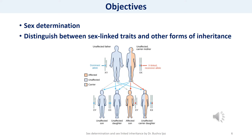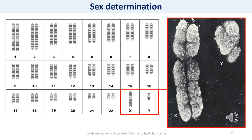As it turns out, Aristotle was onto something — at least in the case of some reptiles, in which the temperature of the nest determines the sex of the embryo. For most animals, however, sex is determined chromosomally. Sex determination results in the development of individuals with characteristics that allow them to be identified as males, females, or in some cases hermaphrodites.